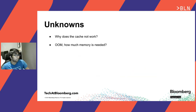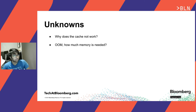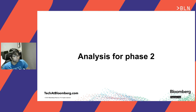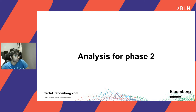At this point we had two major unknowns: Solr has many different caches — why did the cache not work? And why does the Solr JVM go out of memory? Just how much memory does it need? What is the magic number for our use case? The only thing we could analyze at this point was the heap dump from the Solr JVM. This is where we used another great tool called Eclipse Memory Analyzer.